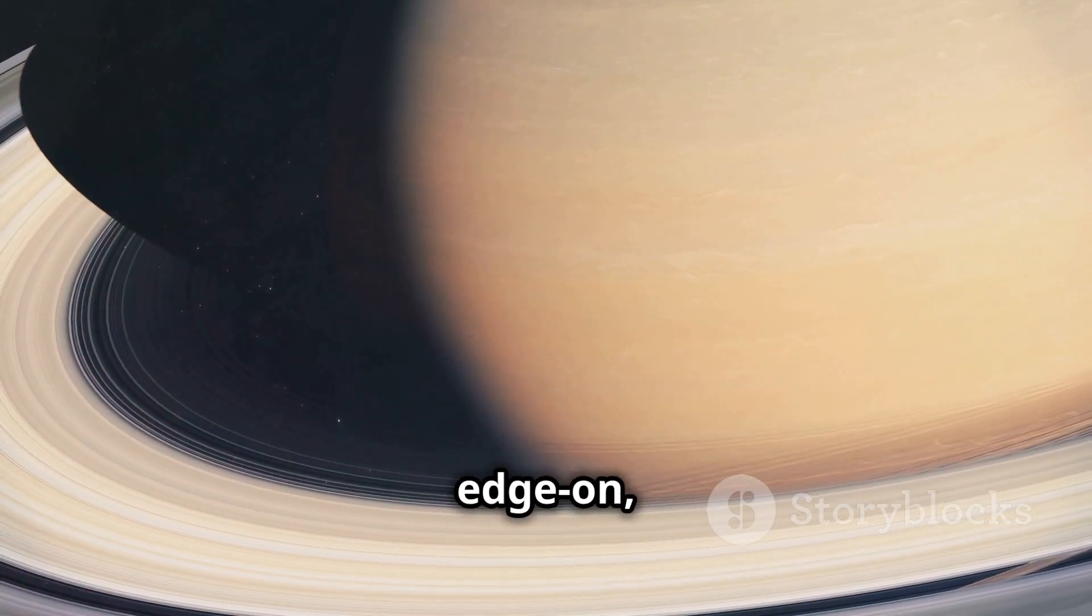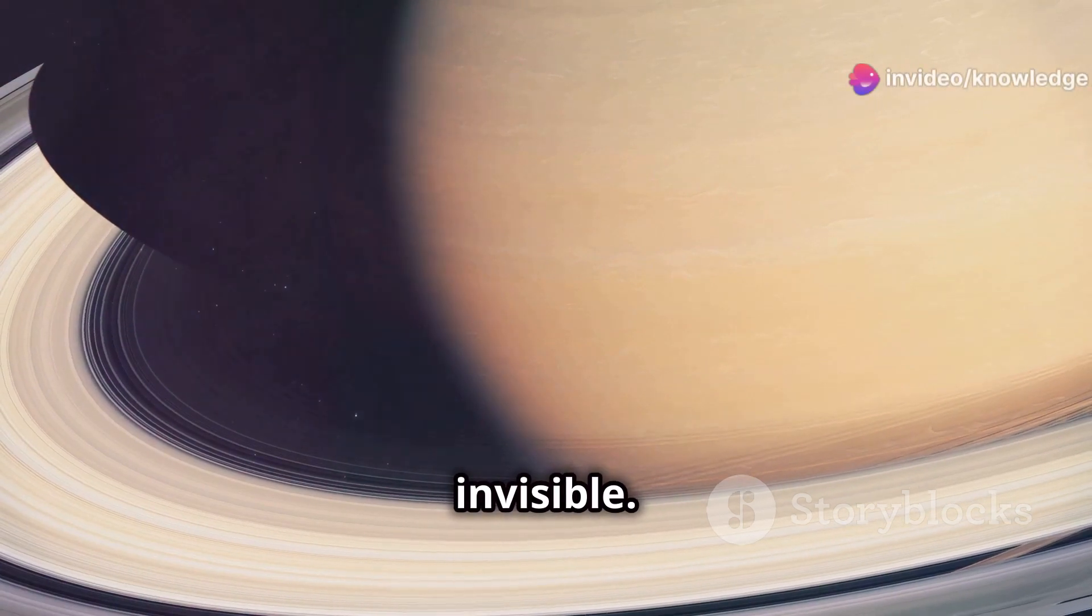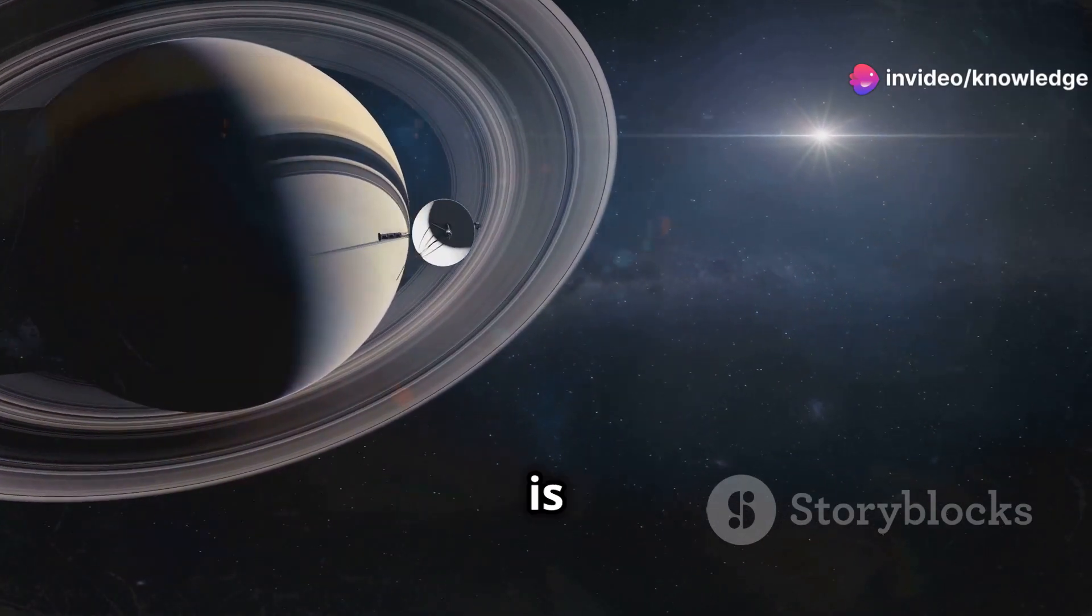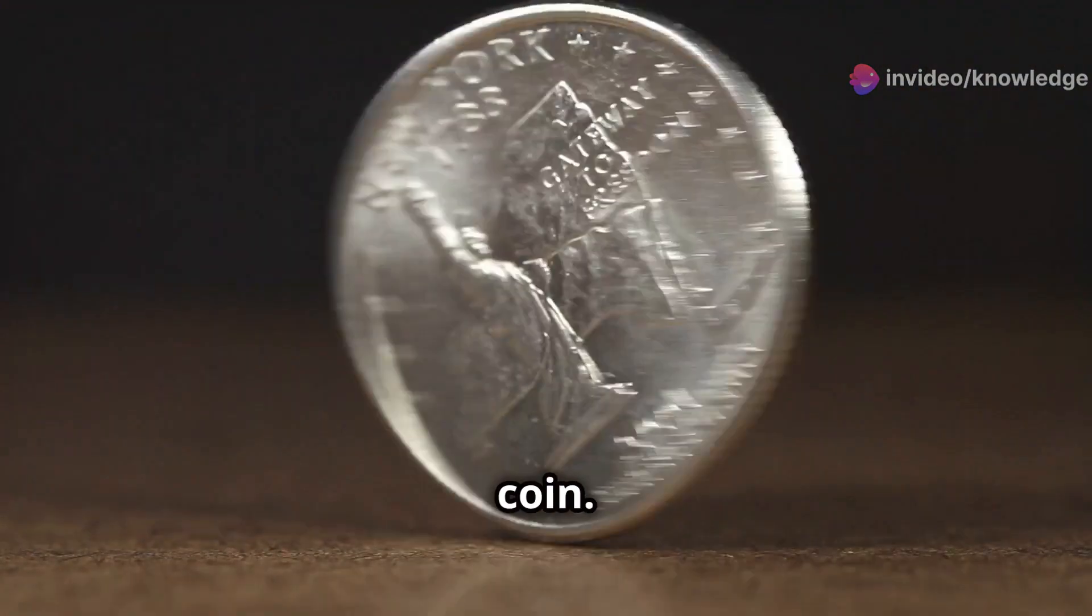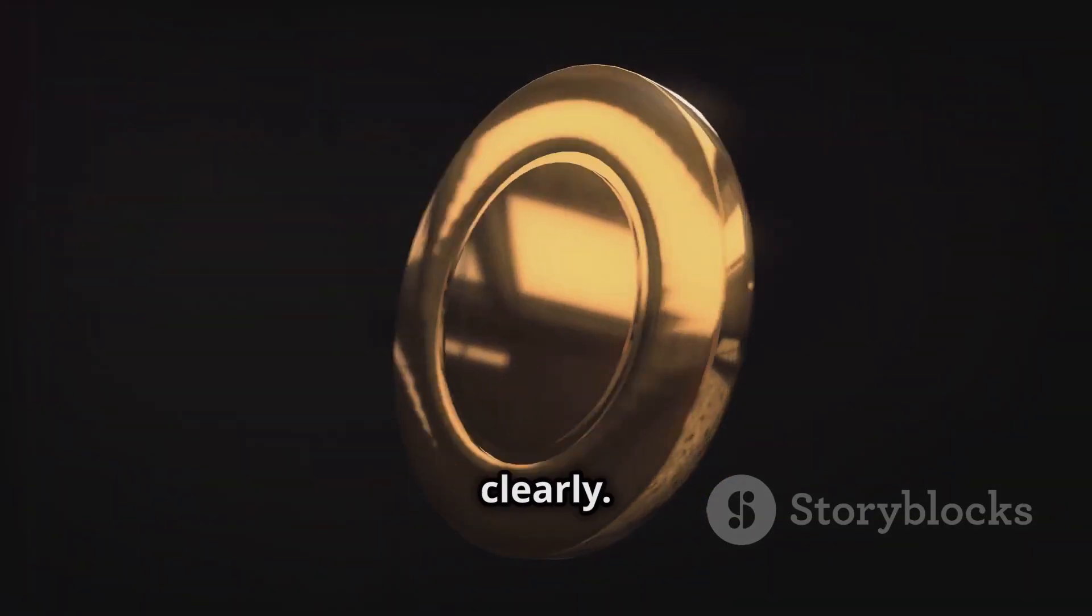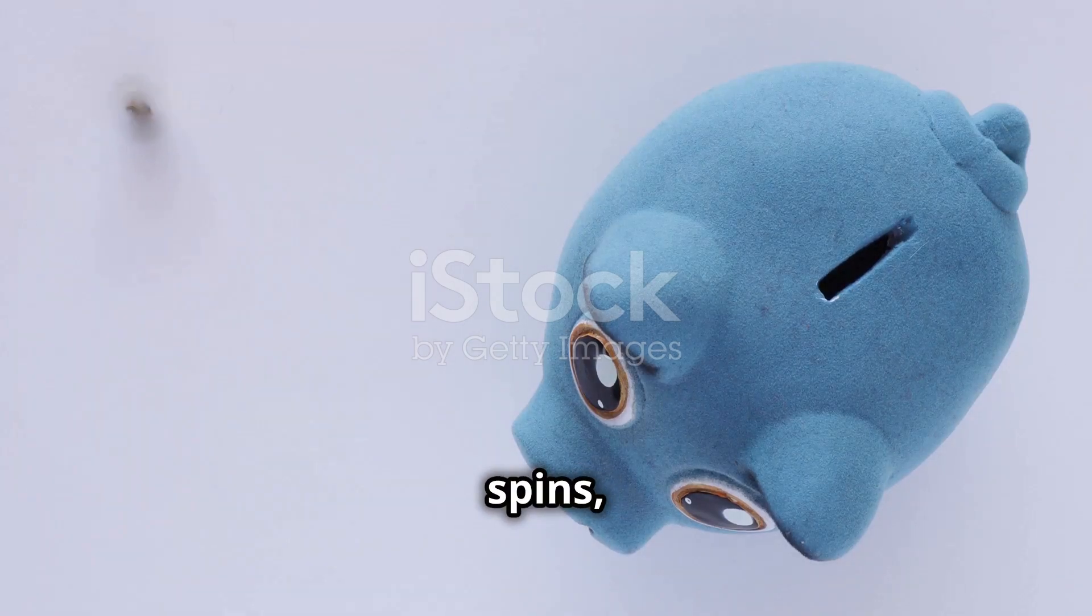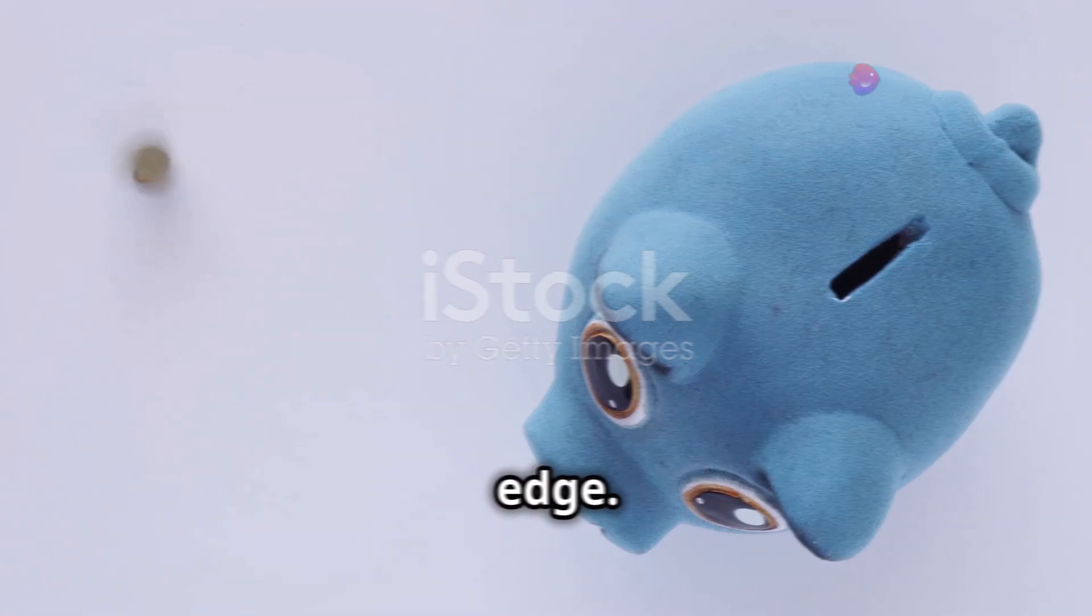Other times, we see them edge-on, making them nearly invisible. This changing perspective is what causes the illusion of the rings disappearing. It's like watching a spinning coin. When it's tilted towards you, you see its face clearly. But as it spins, it thins out until you only see the edge.